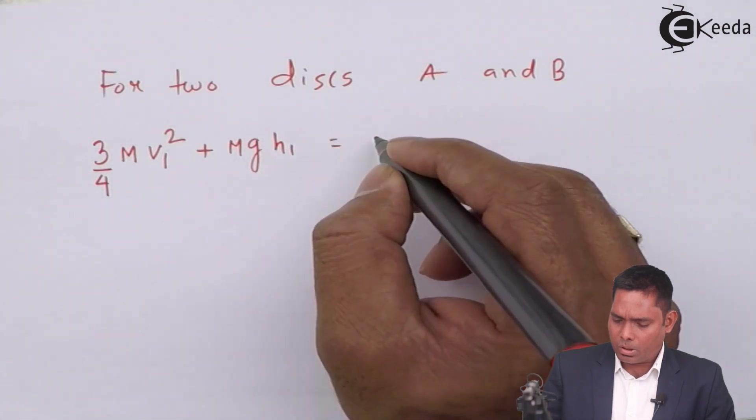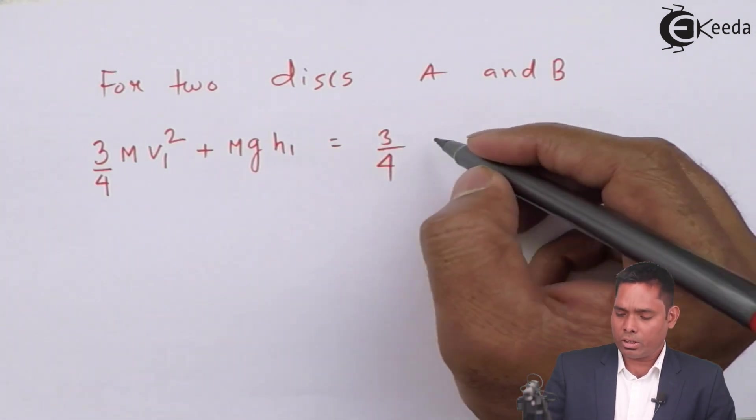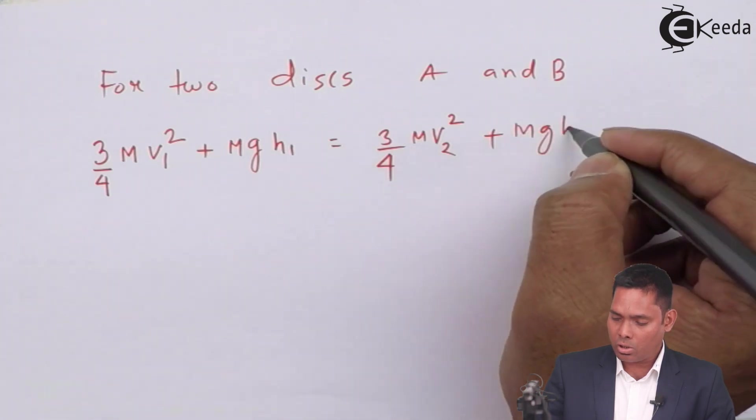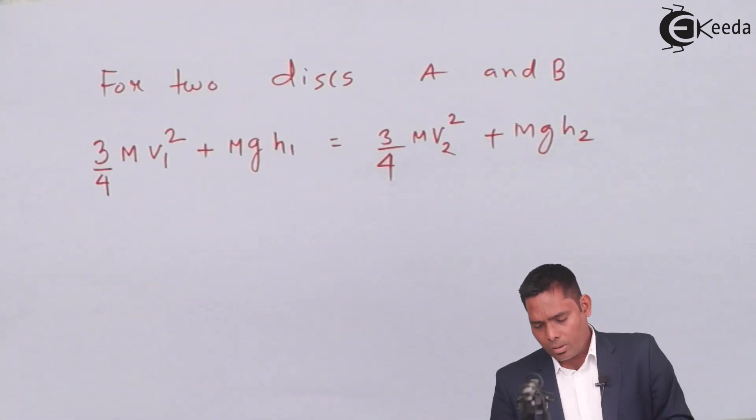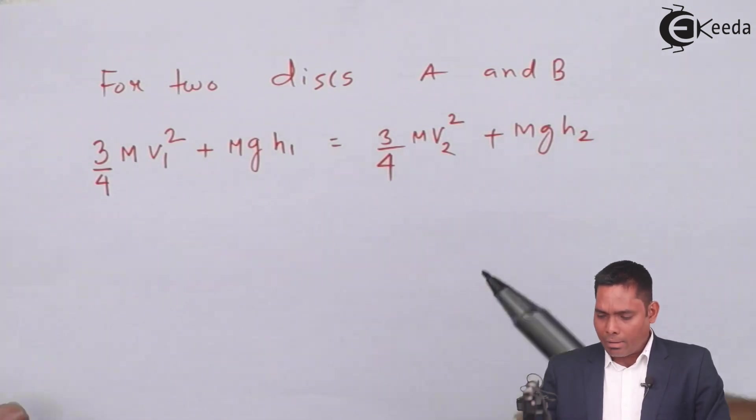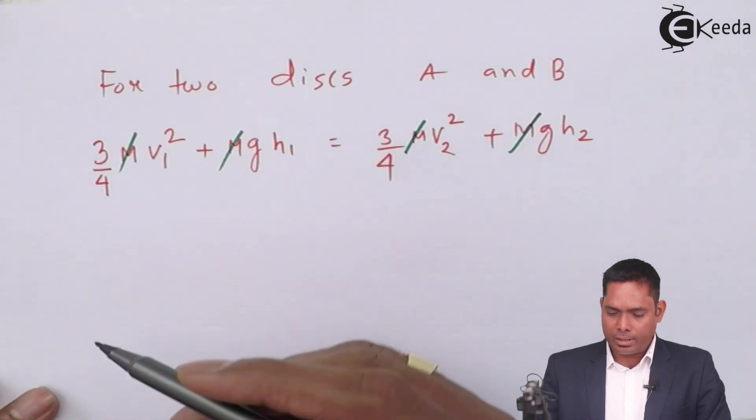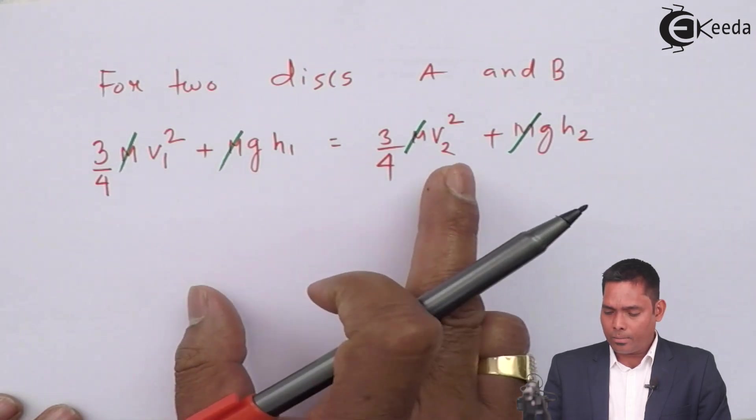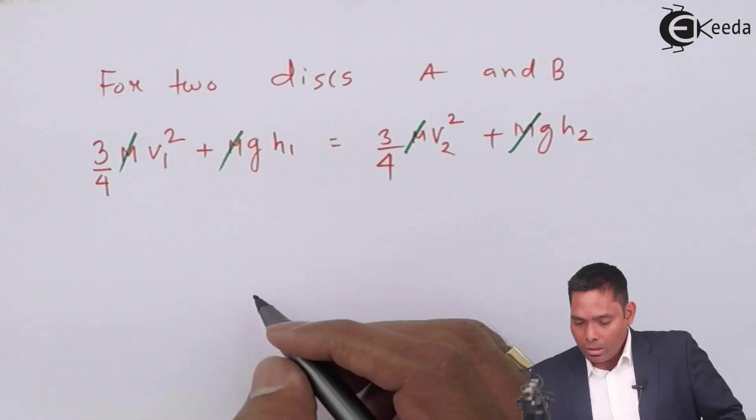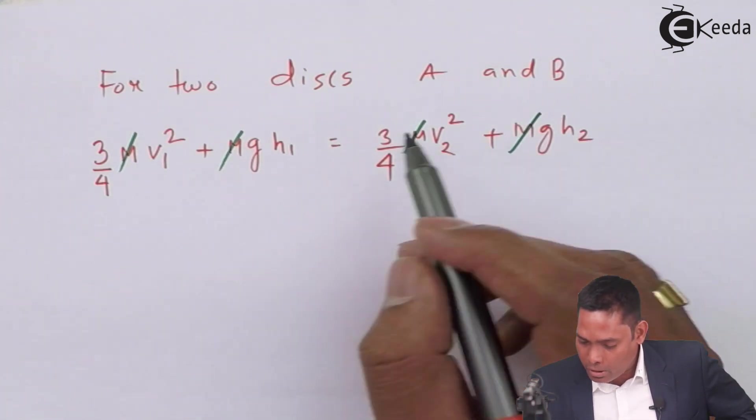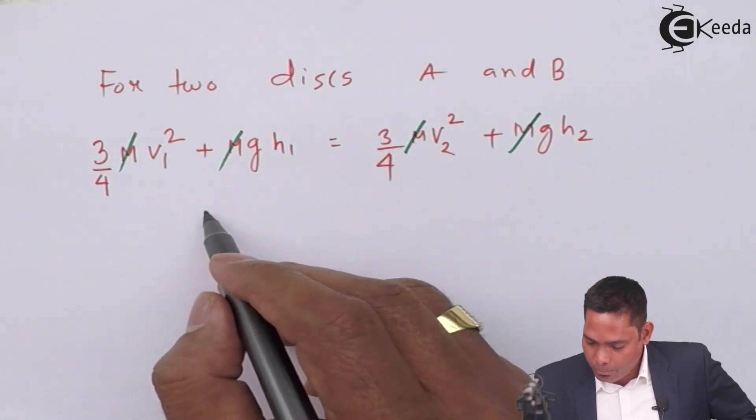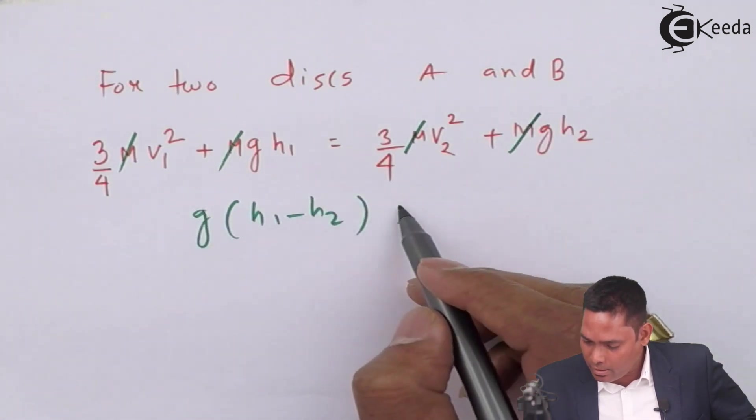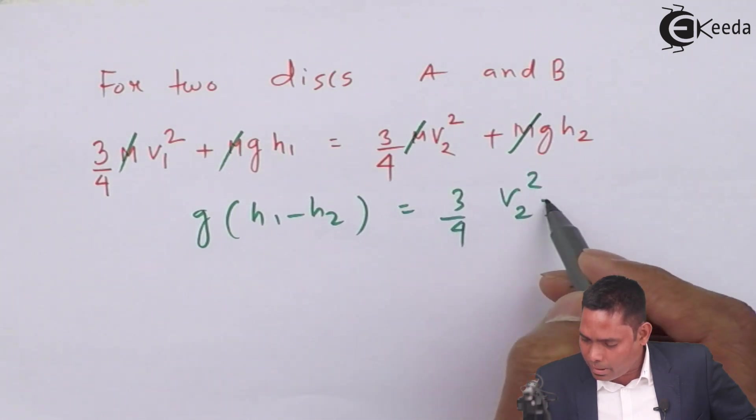Now this must equal the initial energy of B, which is 3/4 M V2 squared plus M G H2 because that height is H2. If it is the case, then I'll cancel M. And I'll switch this over to there. Then I'll have G of H1 minus H2. This is 3/4 of V2 squared minus V1 squared.